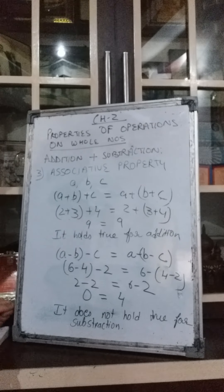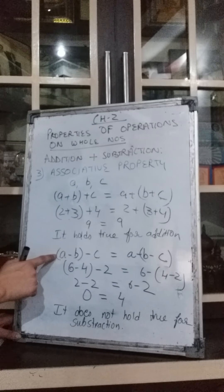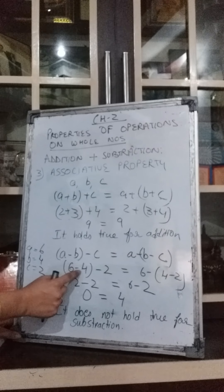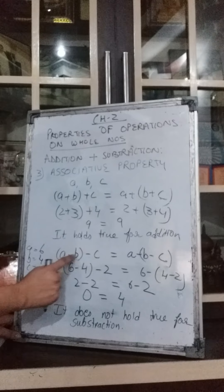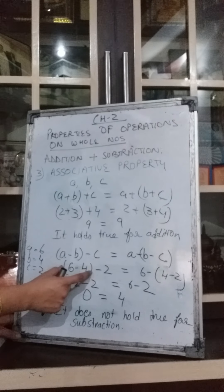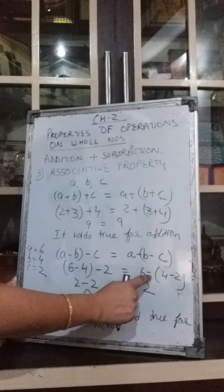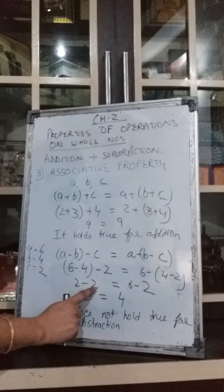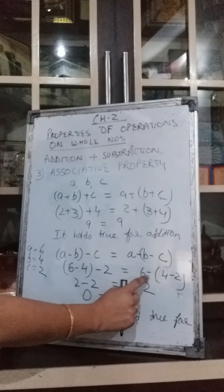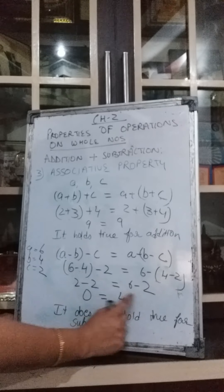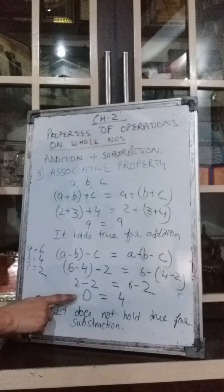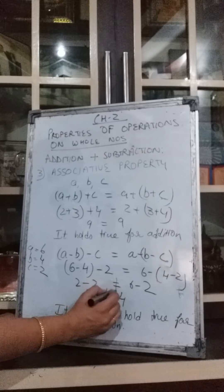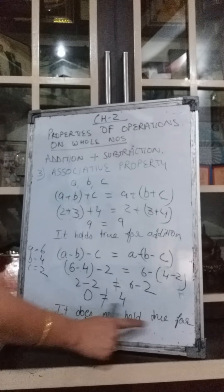Now let us check associative property for subtraction. Take A as 6, B as 4 and C as 2. Left hand side: (6 minus 4) minus 2 — 6 minus 4 gives 2, so 2 minus 2 gives 0. Right hand side: 6 minus (4 minus 2) — 4 minus 2 gives 2, so 6 minus 2 gives 4. They are not equal, so associative property does not hold true for subtraction.